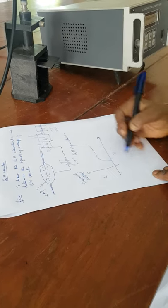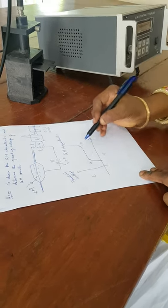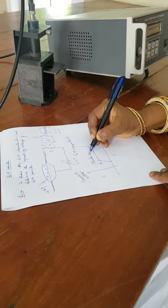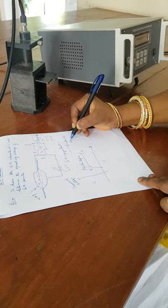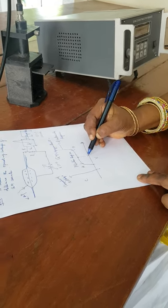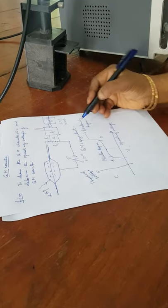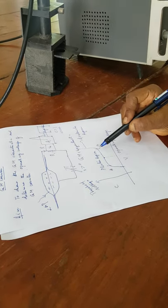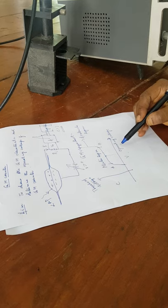In the GM characteristic, we see two specific regions: A-B and B-C. A-B is called the plateau region and B-C is called the avalanche region. The range of voltage at which the counts remain almost constant is called the plateau region.